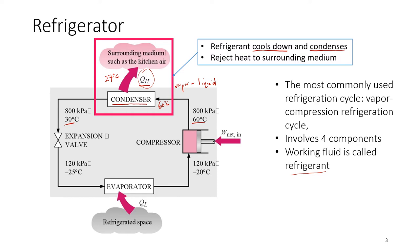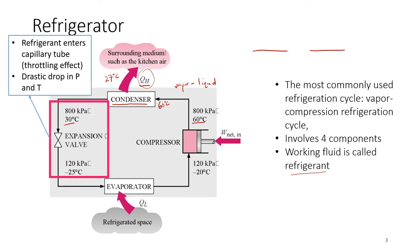As it leaves the condenser, it enters the expansion valve. What happens in the expansion valve? It's like a capillary tube with a throttling effect — you can refer to our notes in chapter 5. What happens here is a drastic drop in pressure and temperature. It loses some temperature after the condenser, but it's not enough — we want it to be colder. So 800 kPa becomes 120 kPa, and 30 degrees becomes negative 25 degrees Celsius.